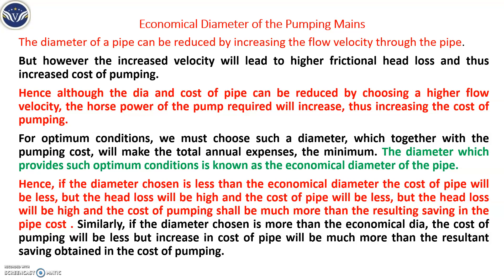The continuation topic is economical diameter. So what exactly is the meaning of economical diameter? Economical diameter in a pumping main means you should select a diameter in such a way that it is cost effective, less expensive, and the maintenance cost is also less. Normally when we speak of an economical diameter, we tend to reduce the diameter of the pipe itself.